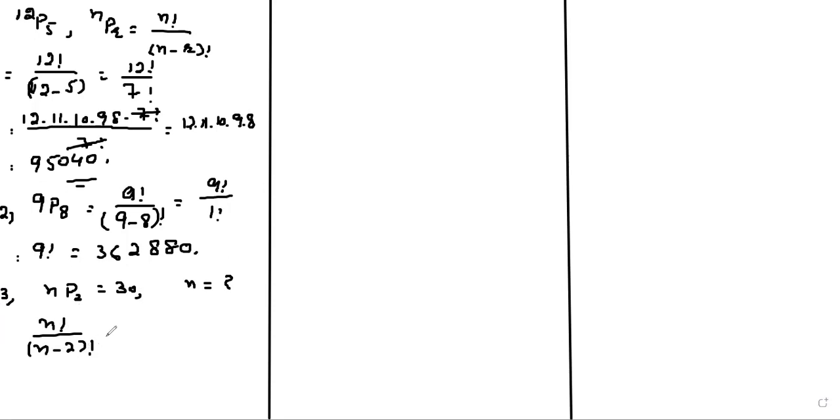This is equals to N factorial means N times N minus 1 times N minus 2 factorial. And you see N minus 2 factorial will be cut by N minus 2 factorial. Now we have, this implies N times N minus 1 equals to 30.